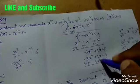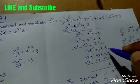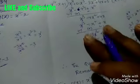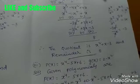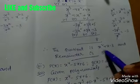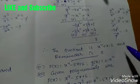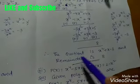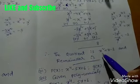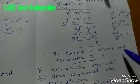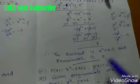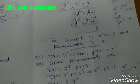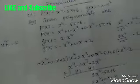5 + 3 = 8. Therefore, the quotient is x² + x - 3 and the remainder is 8.